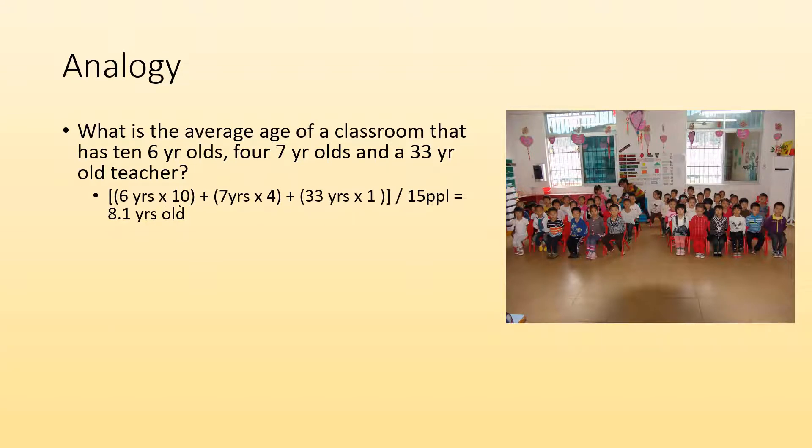I go, all right, six-year-olds, I got 10. So let me do six times 10, I get 60. Plus I got four seven-year-olds, so that's going to be plus 28. And I got one 33-year-old. So I add all those together, divide by 15 people total. Well, that's not right. Yeah, it is. 15 people total and you get 8.1 years old. That makes a lot more sense.